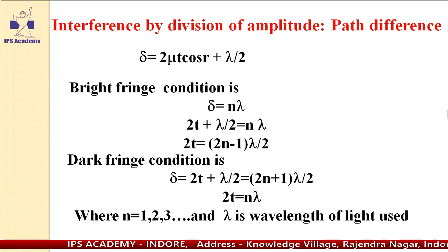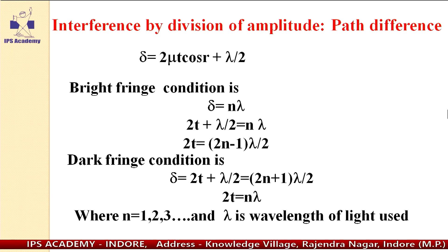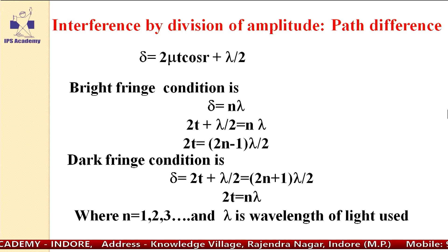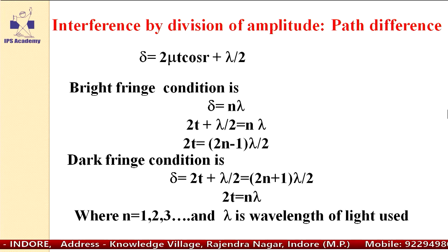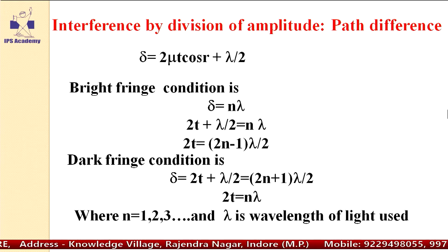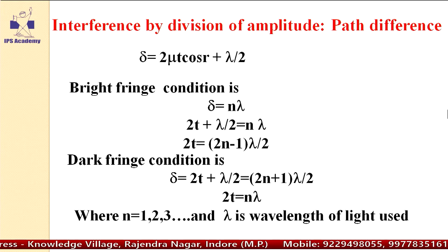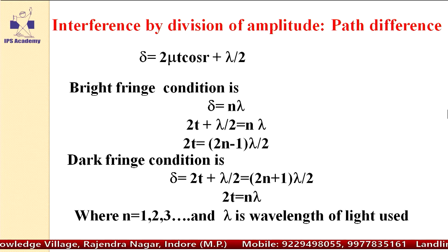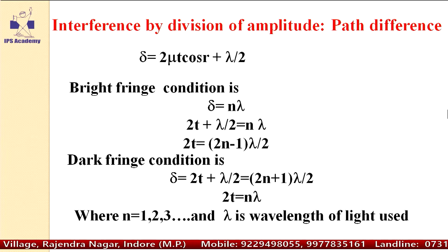When you have to find the condition of dark fringe, then equate this path difference to (2n plus 1) lambda by 2. So 2t plus lambda by 2 equals (2n plus 1) lambda by 2. Then solve it and find the value of 2t: 2t equals n lambda.